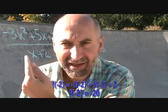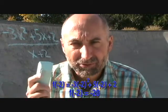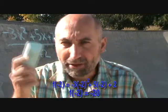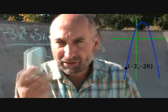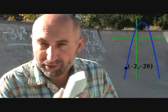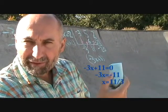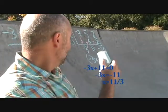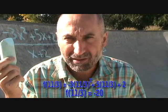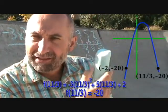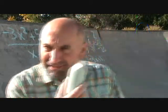If you substitute x equals negative 2 into the top polynomial, you end up with negative 20, which is your y-coordinate. So when x is equal to negative 2 in this function, y is equal to negative 20 — just a coordinate. You can also rewrite the other term: negative 11 divided by negative 3 becomes 11 over 3. If you substitute 11 over 3 into the polynomial, your y-coordinate is also negative 20, giving you another coordinate.